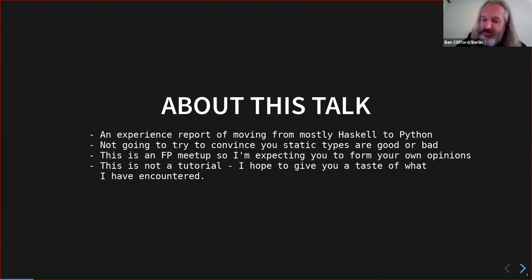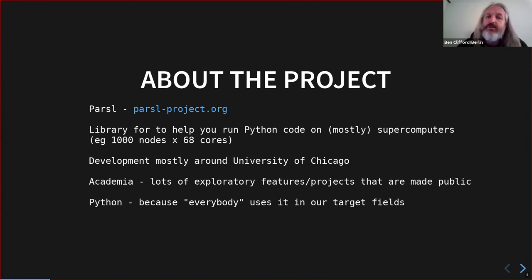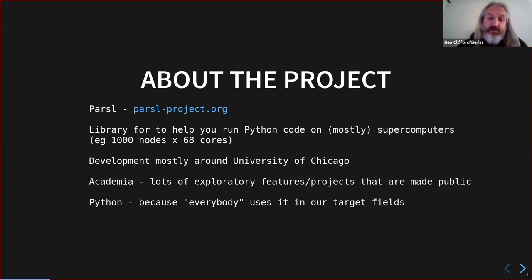The project I moved on to is called Parsl. It's a Python library for writing scientific code and running that scientific code at large scale, usually on supercomputers. If you imagine doing some astronomy processing on a thousand nodes where each node has 68 cores — that's the sort of scale some of our stuff runs at. The library is intended to help you scale your Python code up to run on that. The group is mostly based around University of Chicago, although there are a lot of other people at other institutions. It's academic — there's a lot of building features just to see if they're interesting for research purposes, and then we kick them out the door for other people to play with.